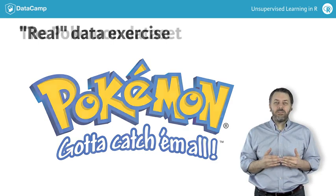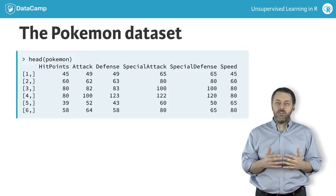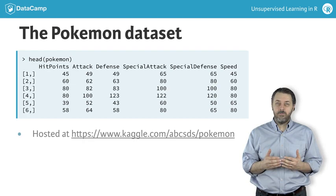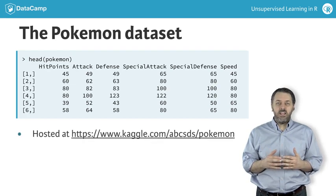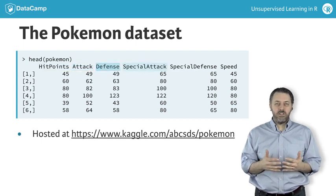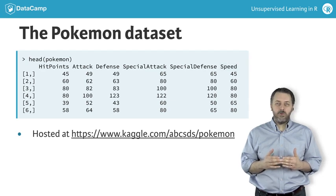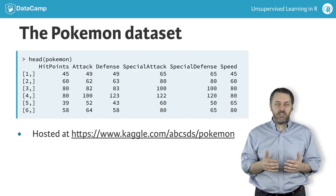The data was originally collected by Alberto Baradis and is hosted on Kaggle at the address on the screen. The data contains six features for each Pokemon: hit points, attack, defense, special attack, special defense, and speed. This is unlabeled data because there's not a single outcome that we want to predict, just some measurements of each Pokemon's abilities.